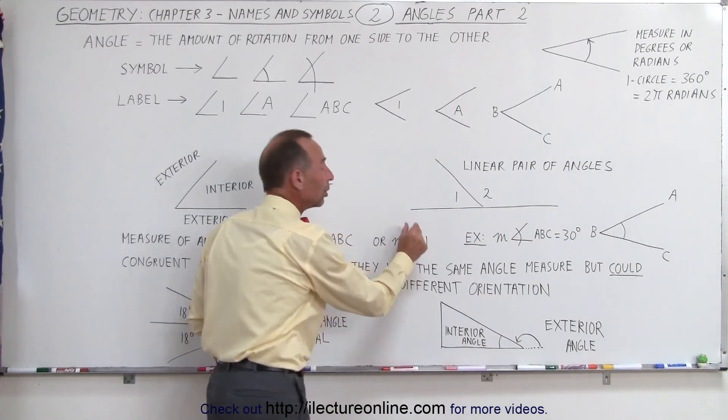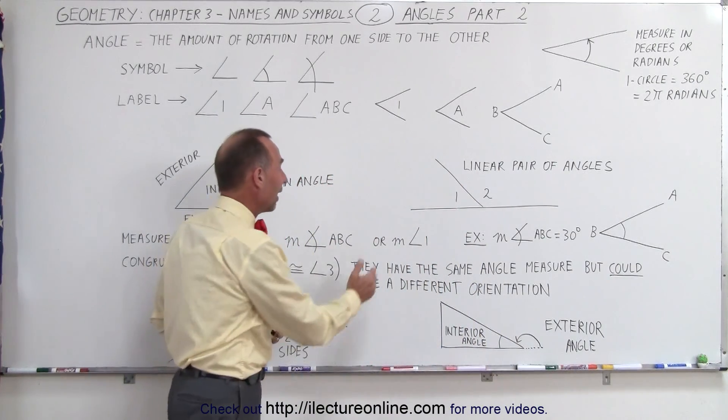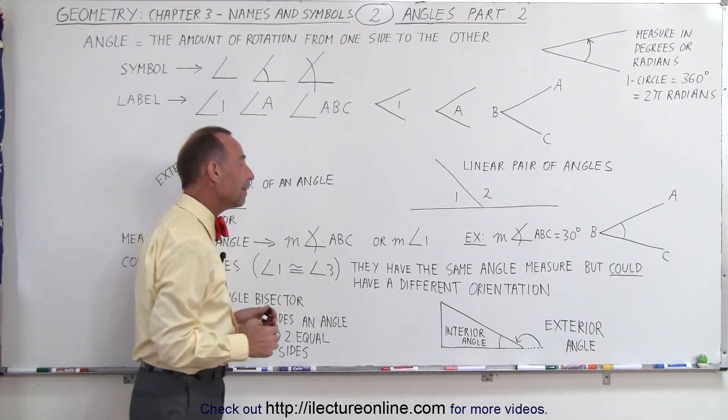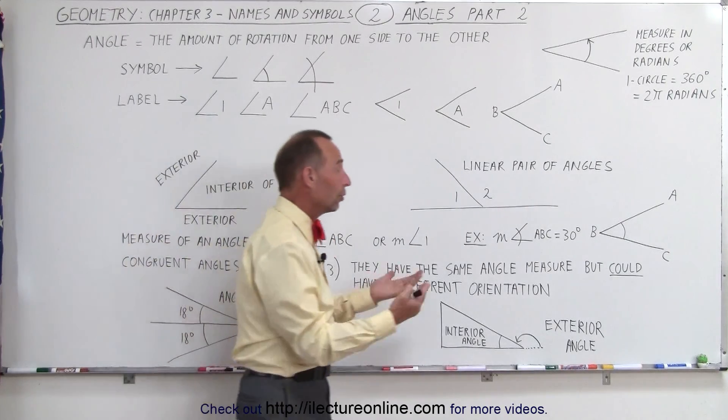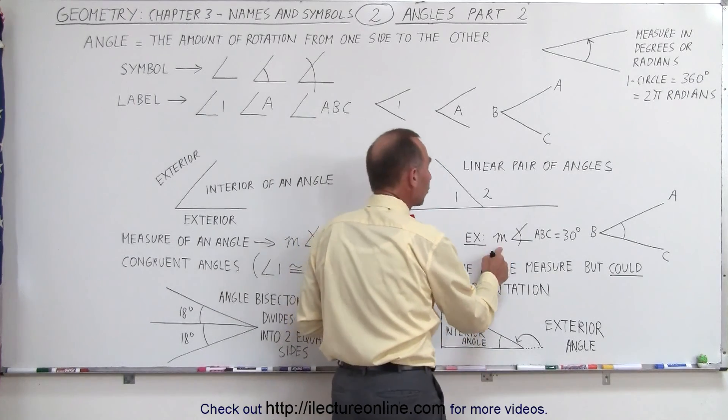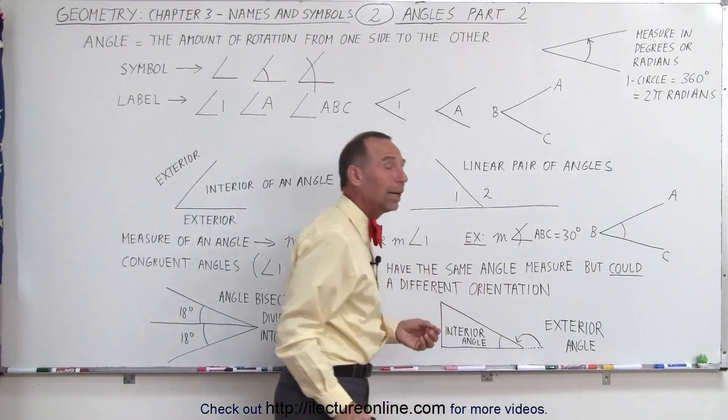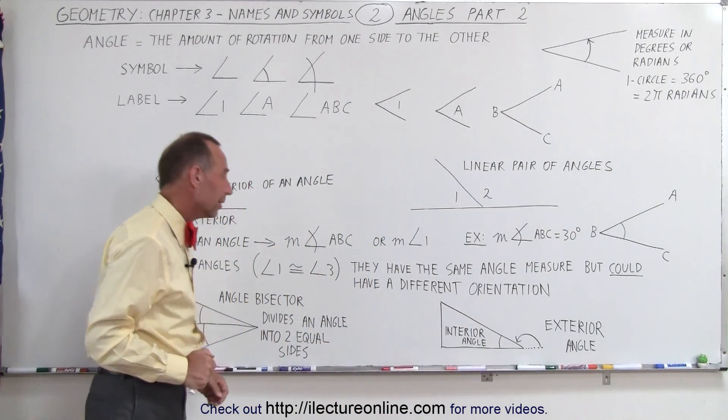Or we can simply label it with a number or letter, so we can have the measure of angle 1 or the measure of angle ABC. For example, if it's 30 degrees, then we write the measure of angle ABC equals 30 degrees. It could also be measured in radians.